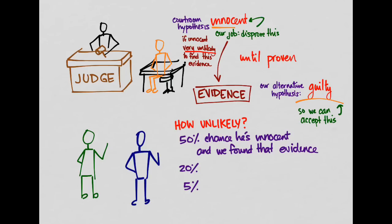So what number would you pick — 5%, 1%, 0.1%? Remember, this is the likelihood of finding this evidence that seems condemning, when the suspect is actually innocent. If there's a 1 in 1,000 chance of finding evidence like this for an innocent person, that means 999 times out of 1,000 he'd be guilty if we found this evidence. Setting this significance level is important.